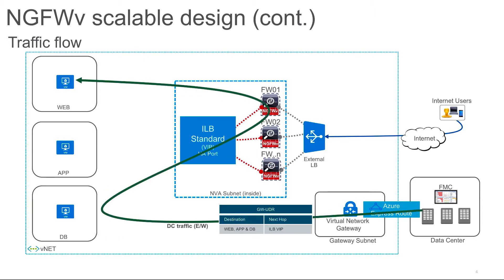The green flow shown here is for traffic coming from your data center. Traffic comes through ExpressRoute, lands on the virtual network gateway, and a UDR applied to the gateway subnet ensures that traffic always goes to the ILB. The ILB then forwards it to the firewall, allowing you to achieve inspection for data center traffic as well.